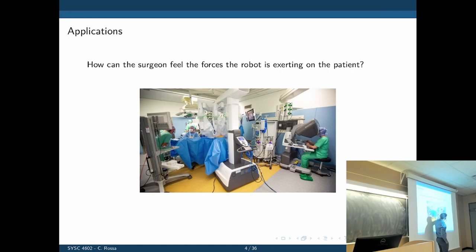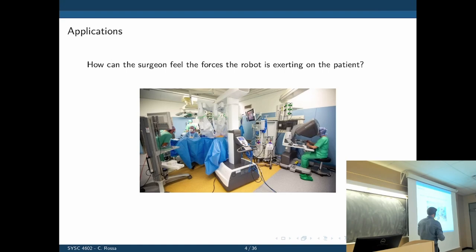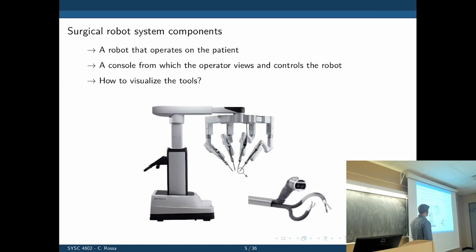Here we have a setup of a surgery going on. The surgeon is sitting there manipulating the robot arm with a console and the camera, and the robot arm is operating on the patient. So there is no physical link between the patient and the surgeon anymore. But what if we want to restore that link virtually — measuring what is happening on the patient side, forces, position, and so on, and displaying that information in the form of haptic feedback to the consoles the surgeon uses?